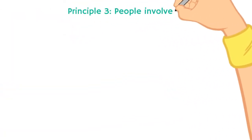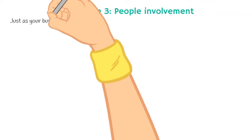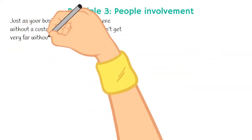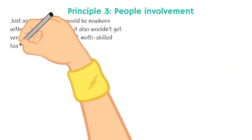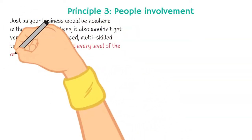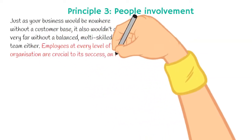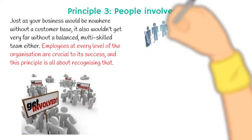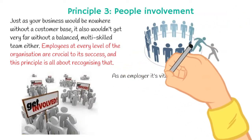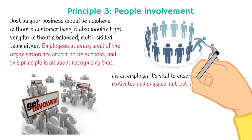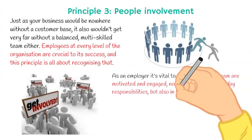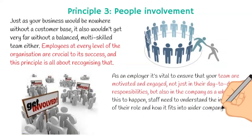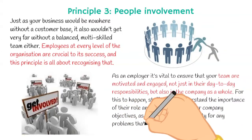Principle three: people involvement. Just as your business will be nowhere without a customer base, it also wouldn't get very far without a balanced, multi-skilled team either. Employees at every level of the organization are crucial to its success, and this principle is all about recognizing them. As an employer, it's vital to ensure that your team are motivated and engaged, not just in their day-to-day responsibilities, but also in the company as a whole. Staff need to understand the importance of their role and how it fits into wider company objectives, as well as take responsibility for any problems that might impede them from doing their job to the best of their abilities.